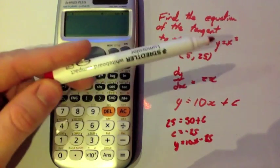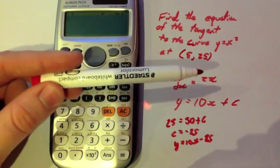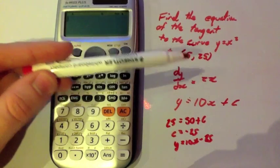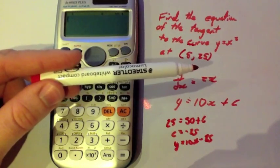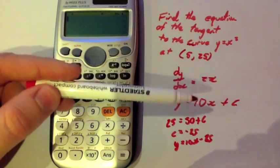Typically what you would do is differentiate it to get dy/dx equals 2x, substitute in the x value to get the gradient of the curve is equal to 10, therefore the gradient of the tangent would also be equal to 10.